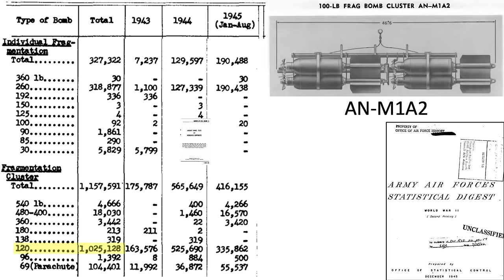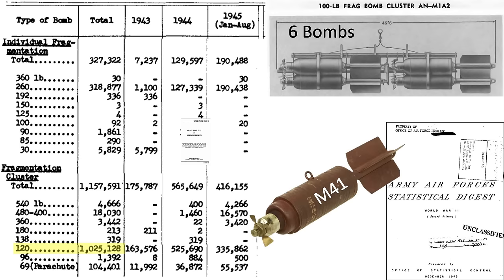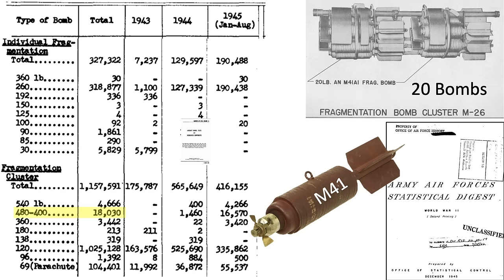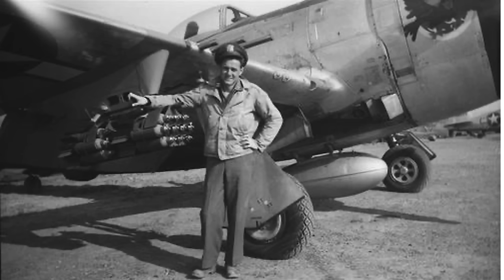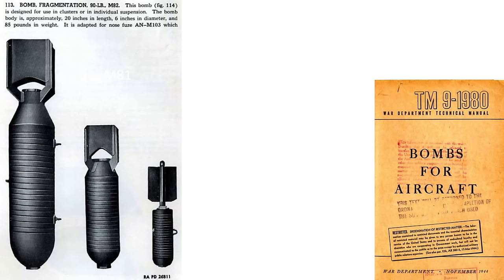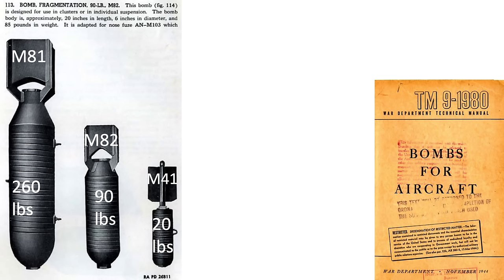The 120-pound class AN-M1-A2 cluster type is shown in this image. The AN-M1-A2 cluster contains six M41 fragmentation bombs. Twenty M41s could be loaded into the larger M26 cluster types. The larger M26 cluster type is slung under the wing of a P-47. A cutaway of the M81 is shown here for reference, along with a size comparison of the M81 260-pound fragmentation bomb, 90-pound M82, and the 20-pound M41. Most of the fragmentation bombs dropped in clusters were M41s, and this will be the focus of this video.